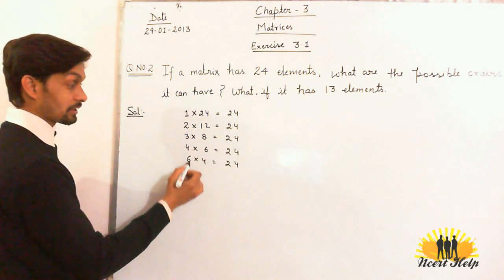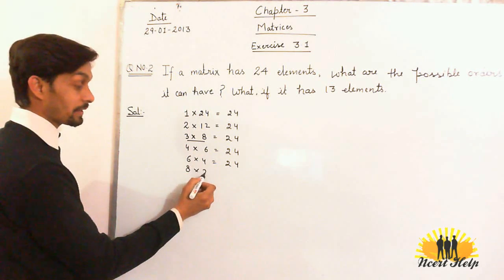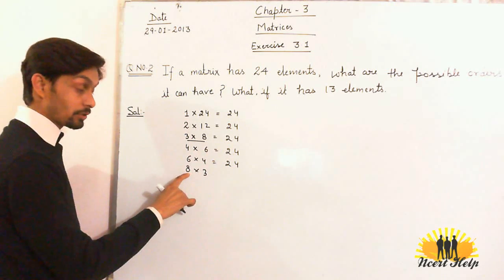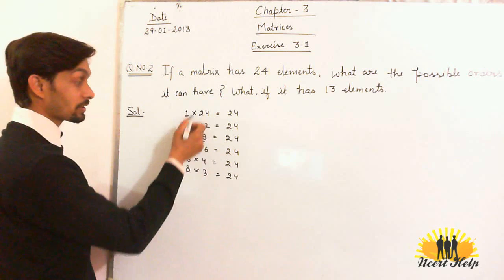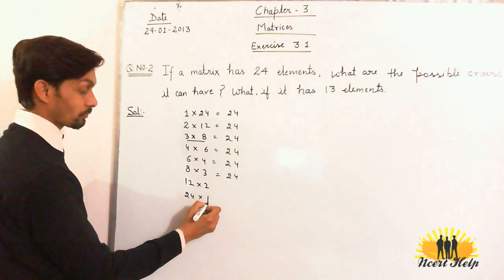Now reverse these. The order 3 into 8 is different from 8 into 3. Why? Here, 3 rows, 8 columns, elements are 24. 8 rows, 3 columns, elements are 24. Similarly, reverse the other two: 12 into 2 and 24 into 1.